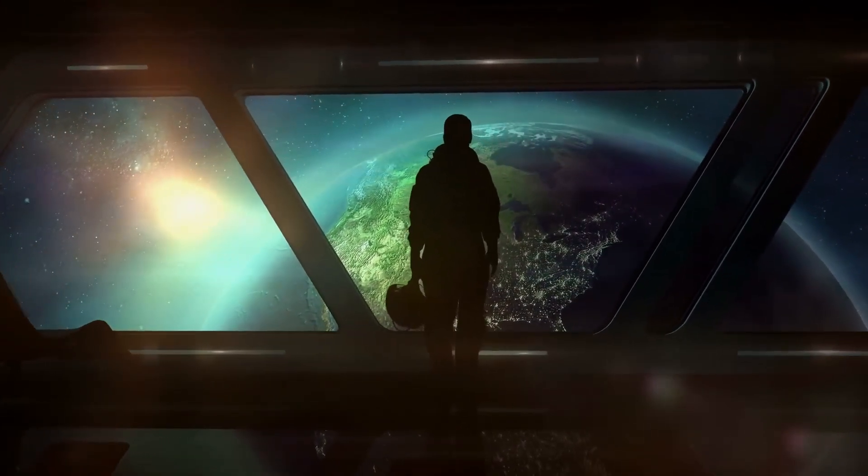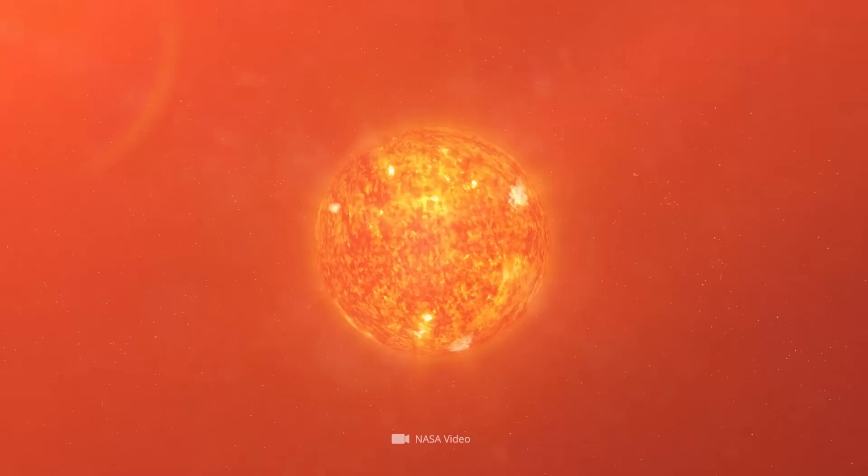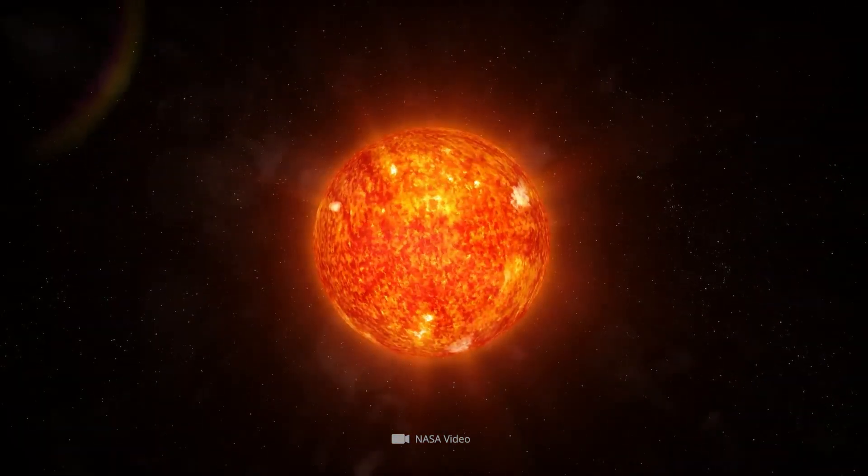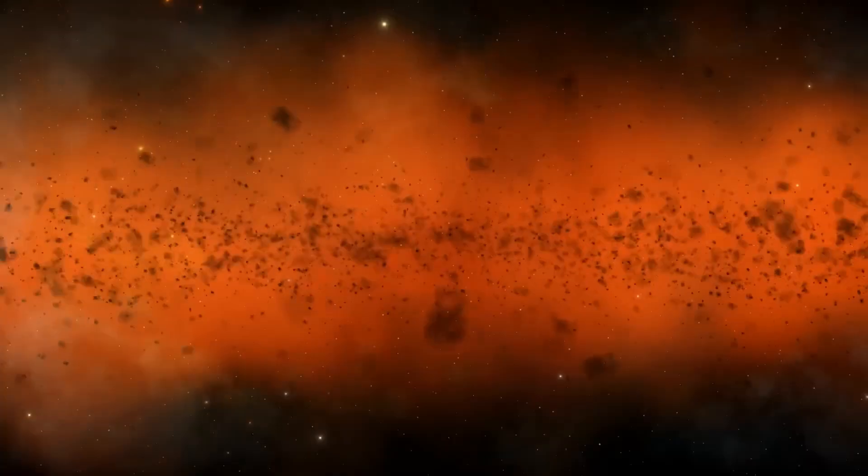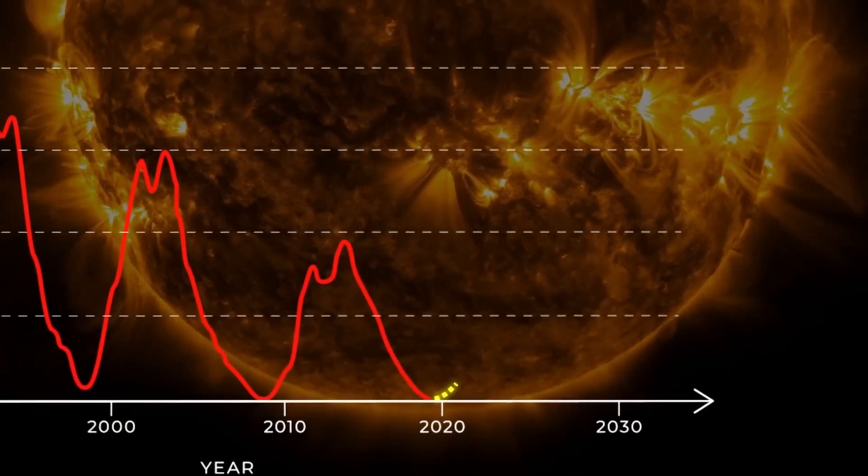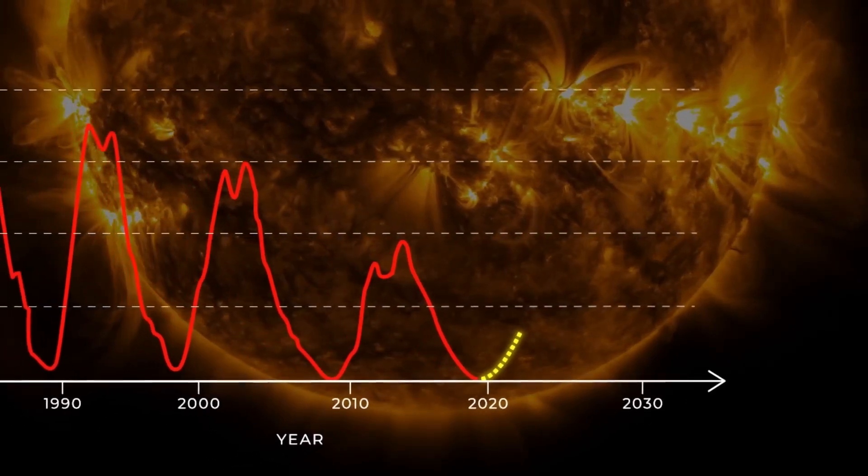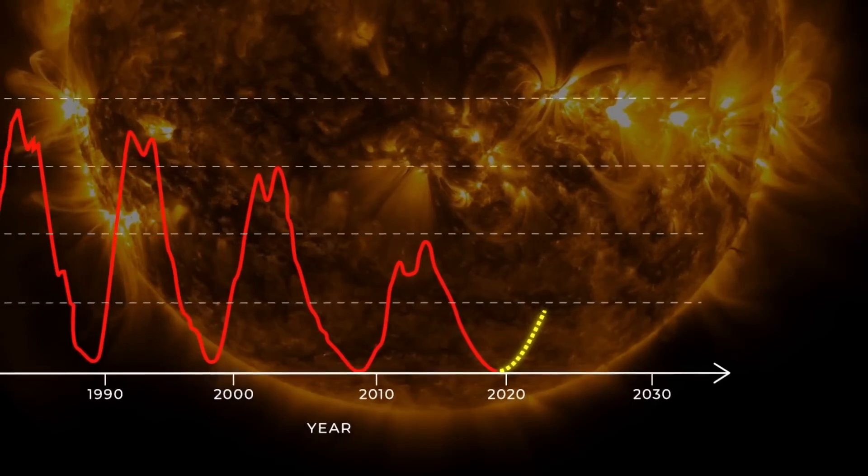While we usually think of auroras as green, especially energetic displays can illuminate the sky with dramatic red hues. These color variations are due to the type of particles and the altitude at which they interact. Green auroras occur when solar particles collide with oxygen at altitudes of 100 to 300 kilometers. Meanwhile, the rare red auroras, like the ones we witnessed in May, are produced when the particles interact with oxygen even higher up, between 300 and 400 kilometers. For these red auroras to be visible to the naked eye, they must be at least 10 times brighter than their green counterparts, making them a truly spectacular sight.